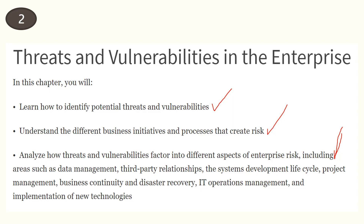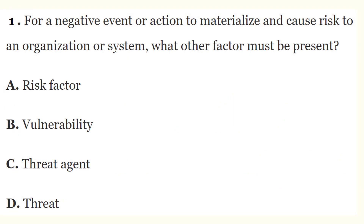Question 1: For a negative event or action to materialize and cause risk to an organization or system, what other factor must be present? The correct answer is B — vulnerability. For a threat to materialize and cause risk to an enterprise or system, a vulnerability must also be present.